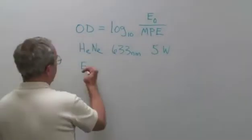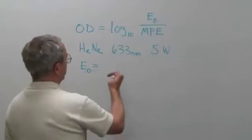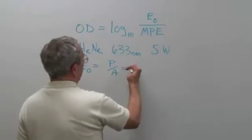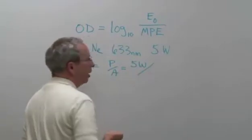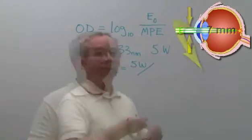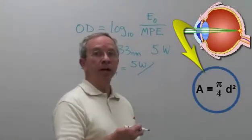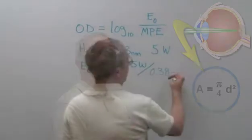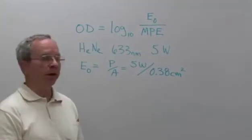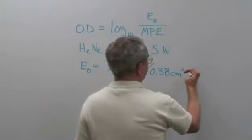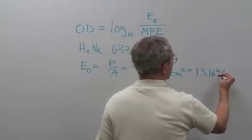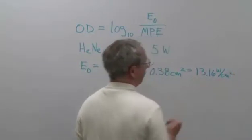What will be the irradiance for a 5 watt laser? That will be the power, 5 watts, and for the area, we're going to use the area of a 7 millimeter pupil: pi divided by 4 times 7 millimeters squared, or that turns out to be 0.38 centimeters squared. And if you calculate that out, that will come out to 13.16 watts per centimeter squared for E0.